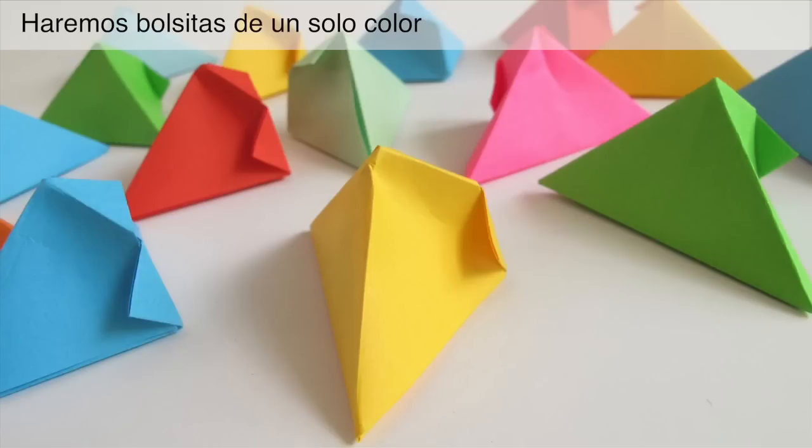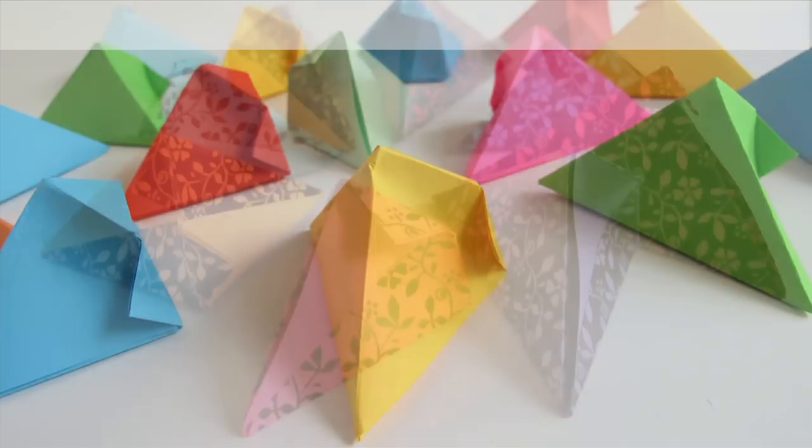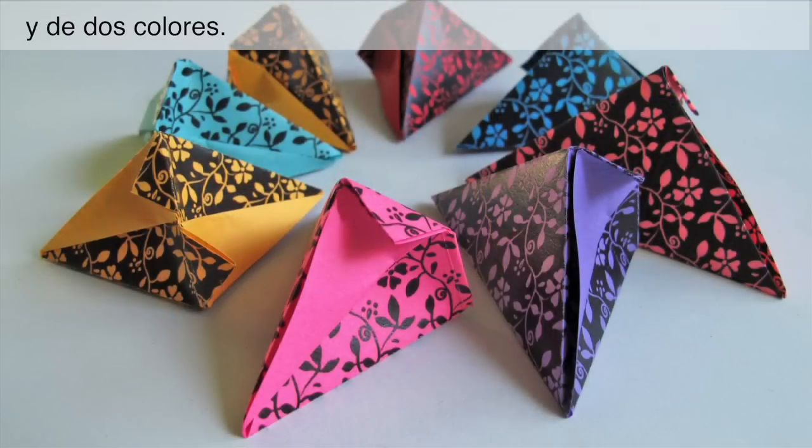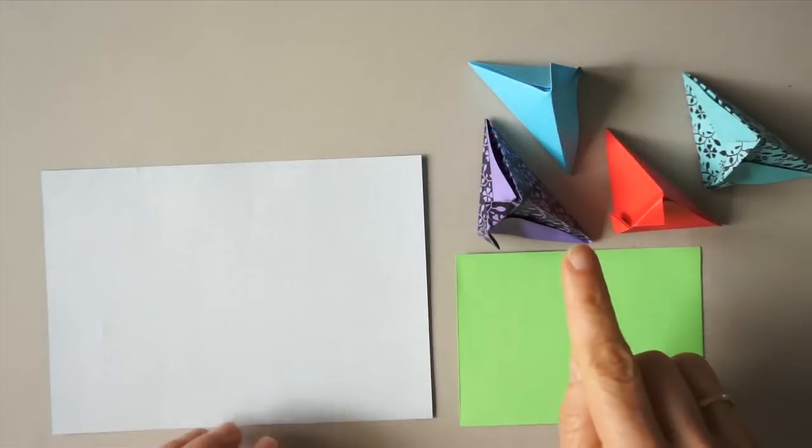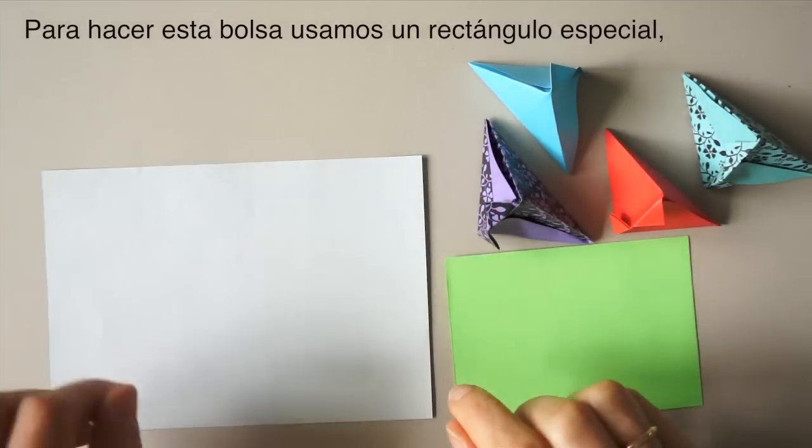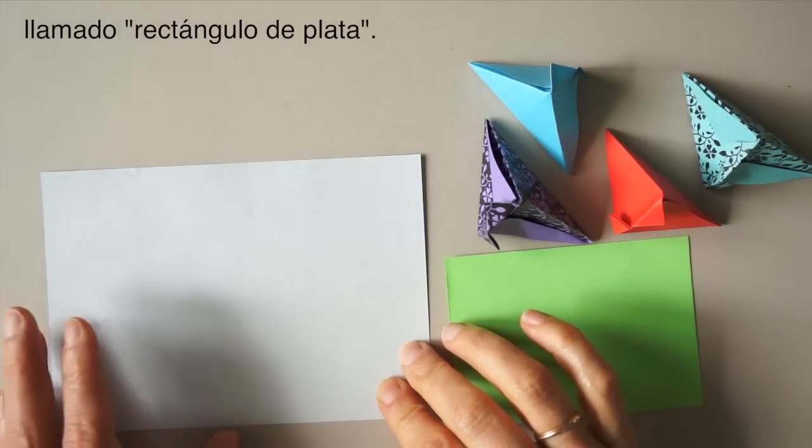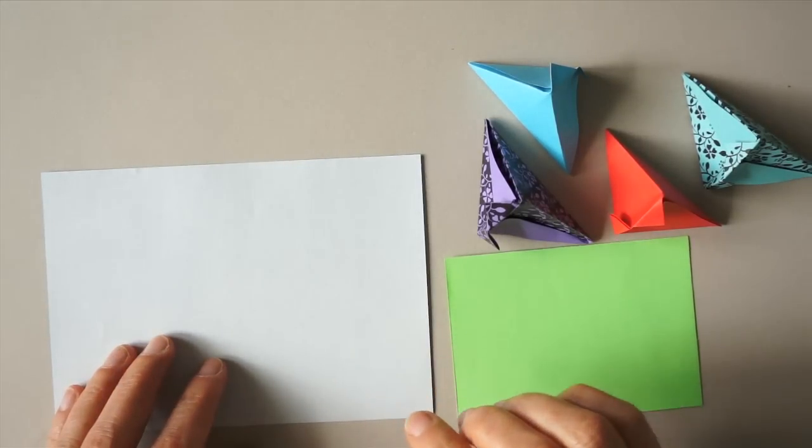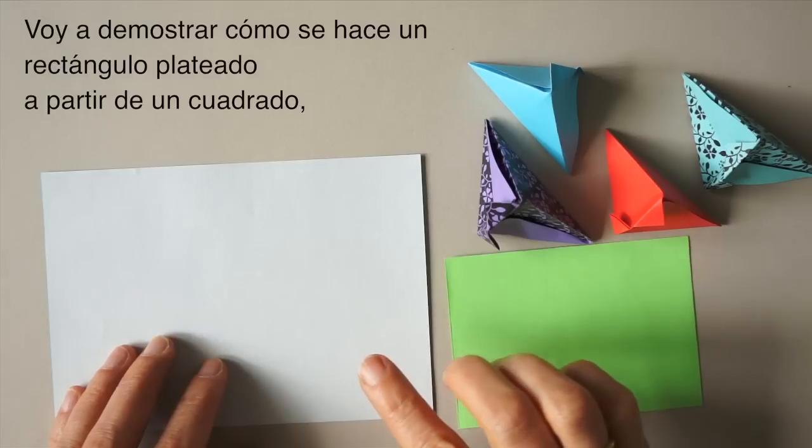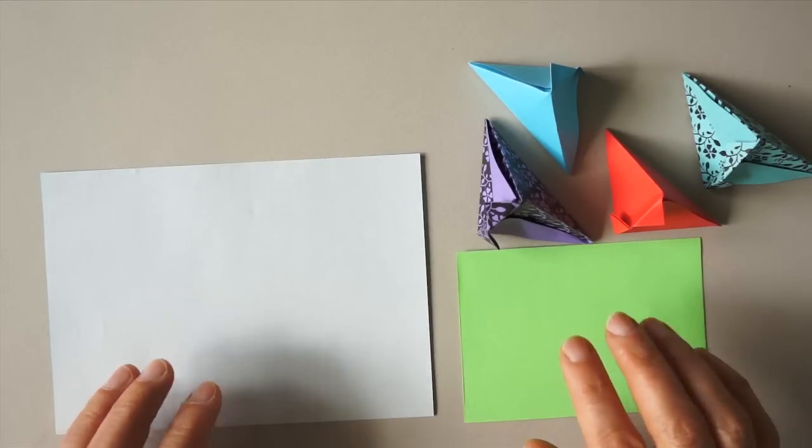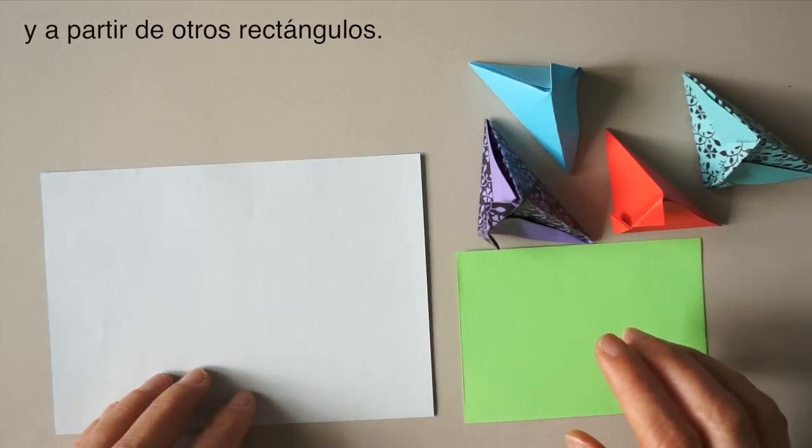We will be making a pouch with monocolored paper and with duocolored paper. To make this pouch we need a rectangle. This is a very special rectangle. It is called the silver rectangle. I will demonstrate first how to make these rectangles from a square and from other rectangles.